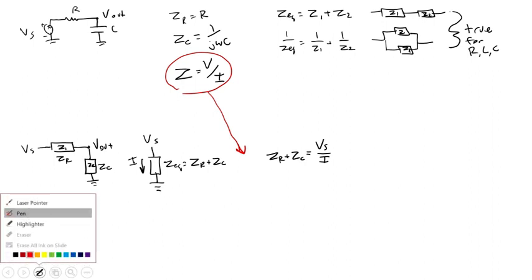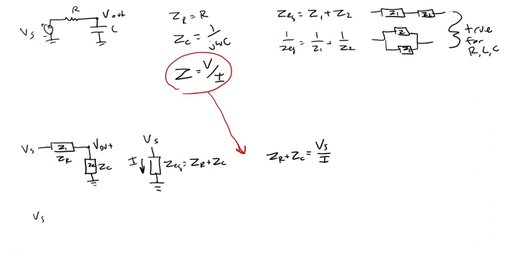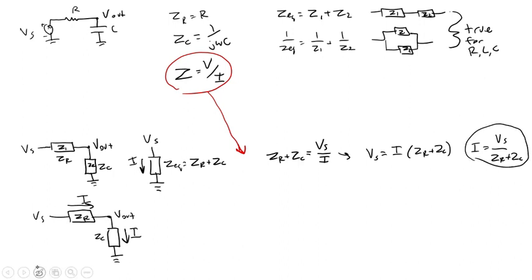Now, just like I did when dealing with resistor networks, if I expand this out again back to my two original impedances, R, ZC, Vout, these are in series, so I know the current through both of them still has to be I. So I can rearrange this equation to get Vs equals I times ZR plus ZC, or write that as I equals Vs over ZR plus ZC. I know that's my current through the entire thing, and it's the current through each one of these components individually because they're in series.